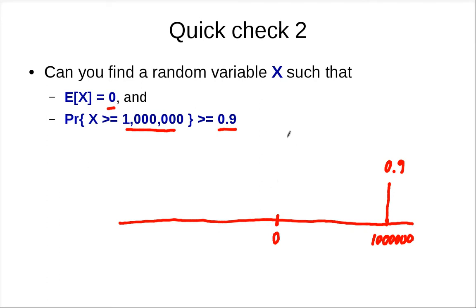What's left is about 0.1. Say this value is B. You can write an equation: 0.9 times 1,000,000 plus B times 0.1 equals zero.